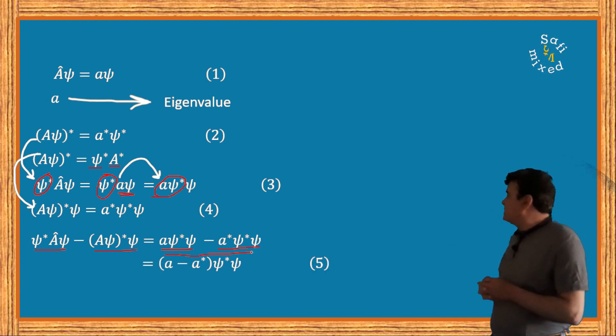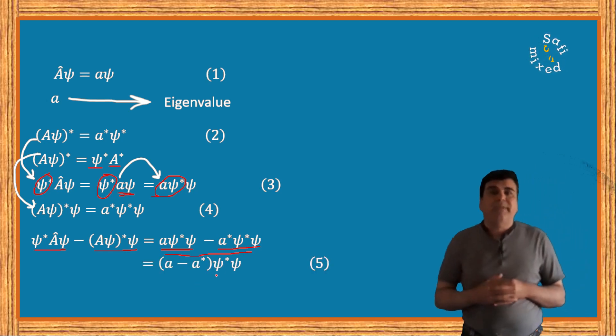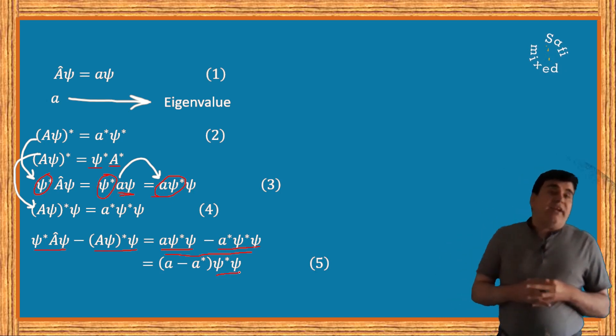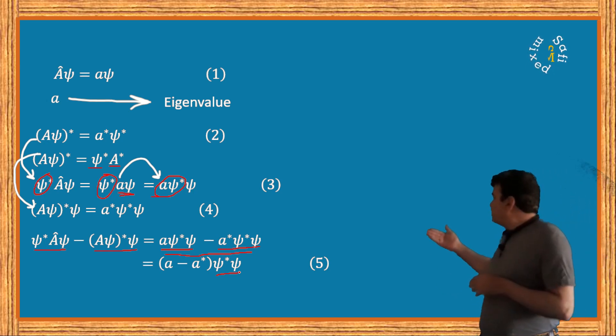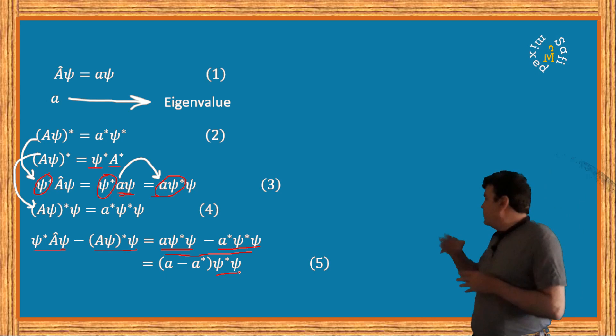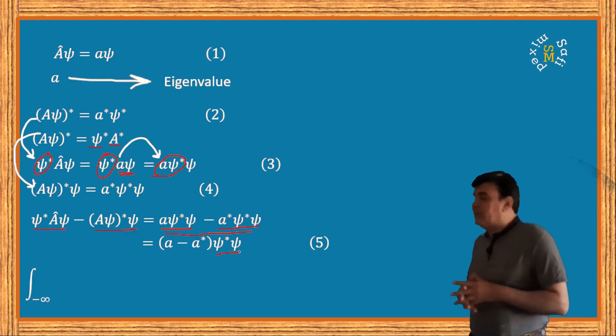If I integrate this equation over the whole space from minus infinity to plus infinity, I can put the equation into this form where I have just taken the integration of the two sides of equation 5.